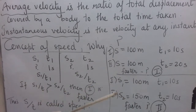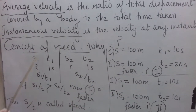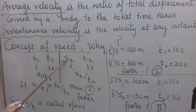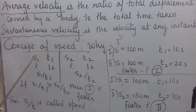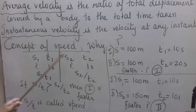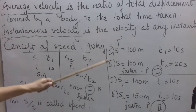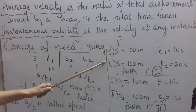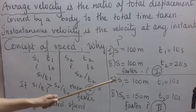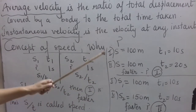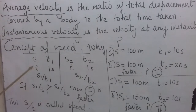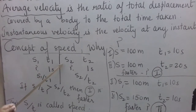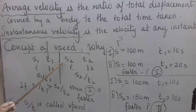But consider a third case where two persons travel different distances in different time intervals — person one travels S1 in time T1 and person two travels S2 in time T2. Both the distance and time are different, making it difficult to directly compare. Unlike the first two cases where either distance or time was the same, here both differ, so it is very difficult to decide who is faster.